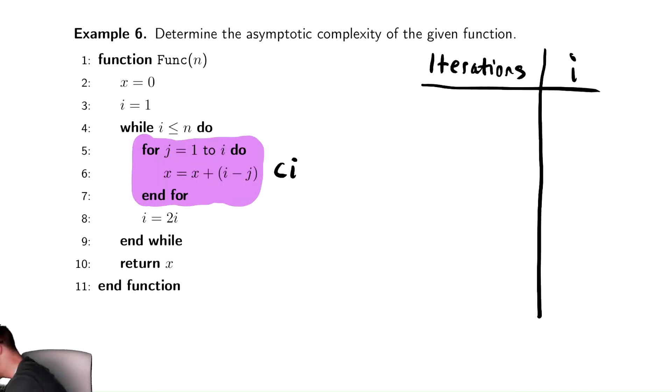i is initialized to be 1. And if we look at our code, it is updated by multiplying by 2. So after 1 iteration, it'll be 2. After 2 iterations, it'll be 2 times 2, which is 2 squared. After 3 iterations, it's going to be 2 squared times 2, which is 2 cubed.